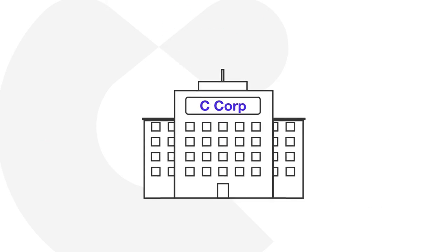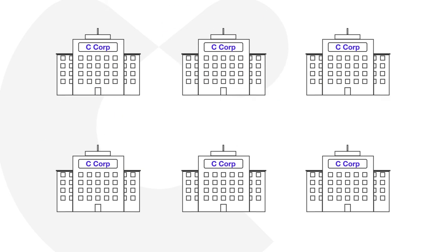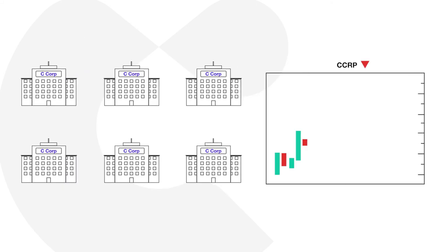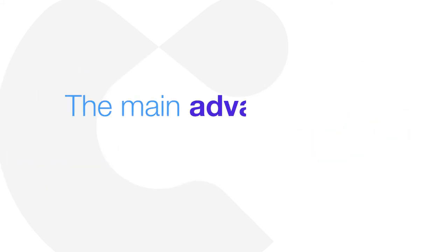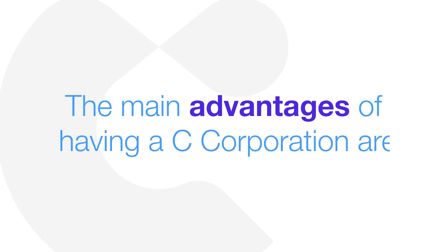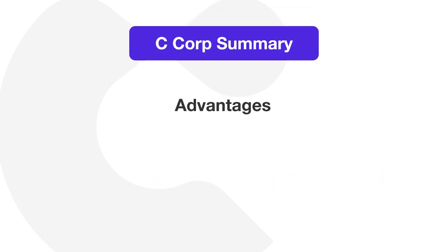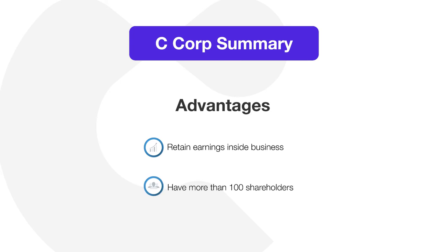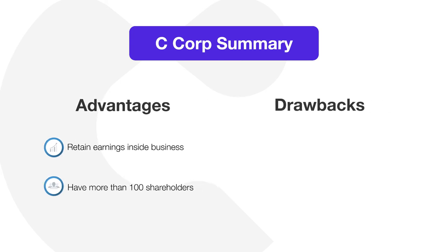C-corps also allow for greater scalability because they can be publicly traded with no limit on the number of shareholders. In summary, the main advantages of having a C-corporation are the ability to retain earnings inside the business and the ability to have more than 100 shareholders. The biggest drawback of having a C-corp is double taxation when taking profits.